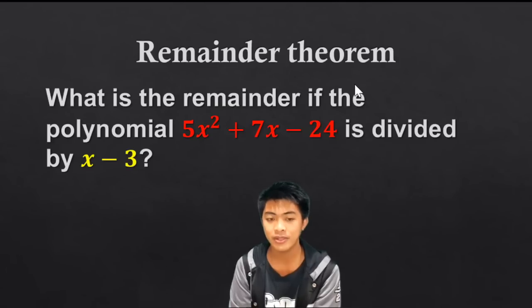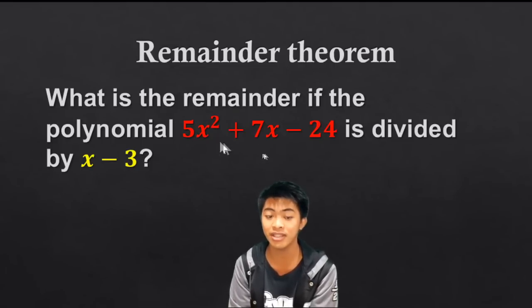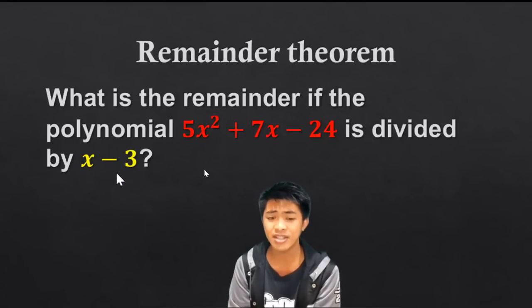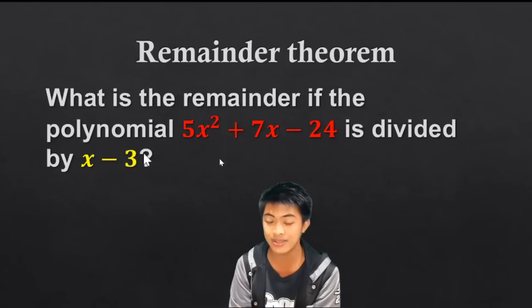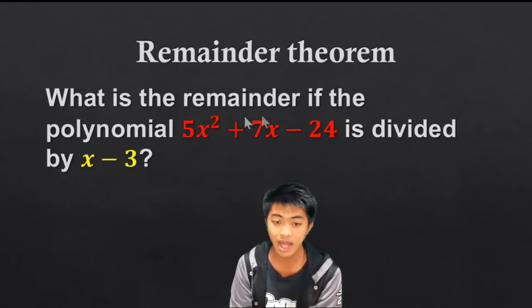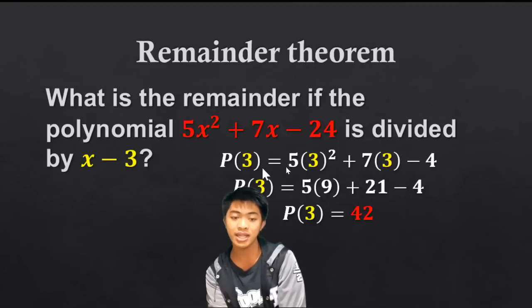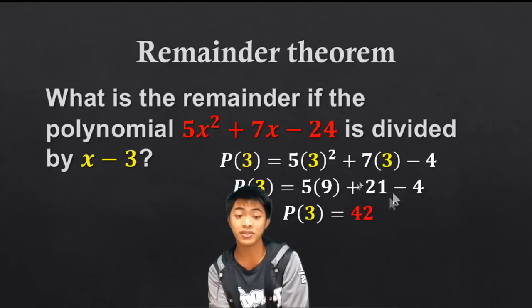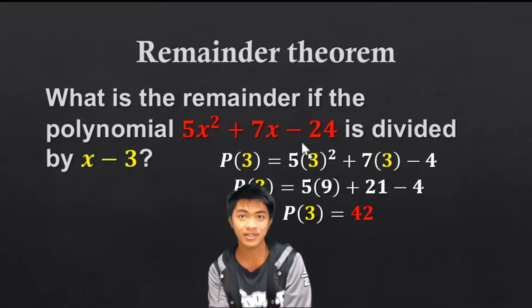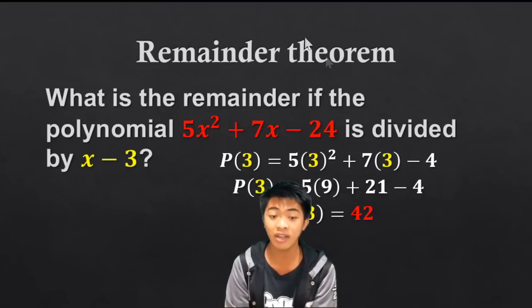Next, the remainder theorem. The remainder theorem states that if a polynomial is divided by a polynomial of the form (x minus c), to find the remainder, we just get the value of c — equate the divisor to zero, solve for x, and substitute that value into the polynomial. Whatever result comes out is the remainder. For example, the value of c is 3, so we substitute 3 into the polynomial, and the result is 42 — so the remainder is 42.